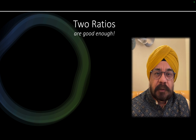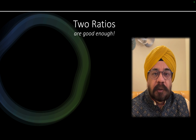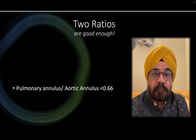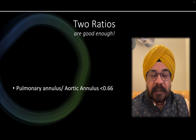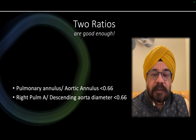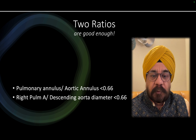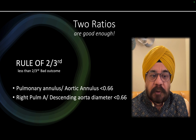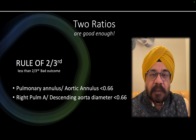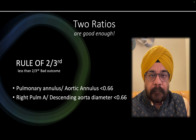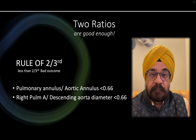But do we have to do all of this? At the end I'm going to tell you just two simple things - no z-scores, nothing. Two ratios are good enough. The pulmonary annulus to aortic annulus ratio: if it is less than 0.66, that indicates severity. Or take the right pulmonary artery to descending aorta diameter ratio - also 0.66. Remember the rule of two-thirds: if either ratio is less than two-thirds, you classify it as severe tetralogy of Fallot.